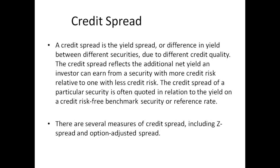A credit spread is the yield spread — the difference in yield between two securities that have different credit qualities. Essentially, if we have a risky bond and a risk-free bond, we would expect the risky bond to pay more interest, to have a higher yield. The difference between those two yields is what we call the credit spread. The credit spread of a security is often quoted in relation to the yield on a credit risk-free benchmark, usually some sort of government bond. There are several different measures, including Z spread and option adjusted spread.